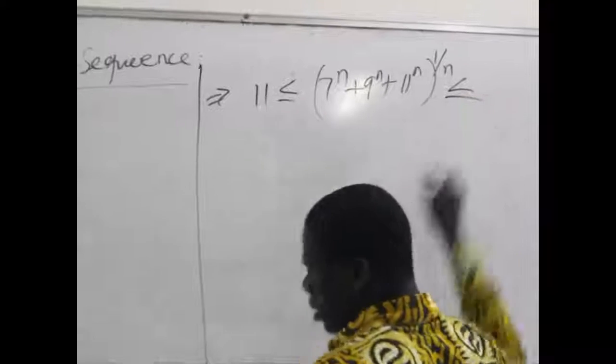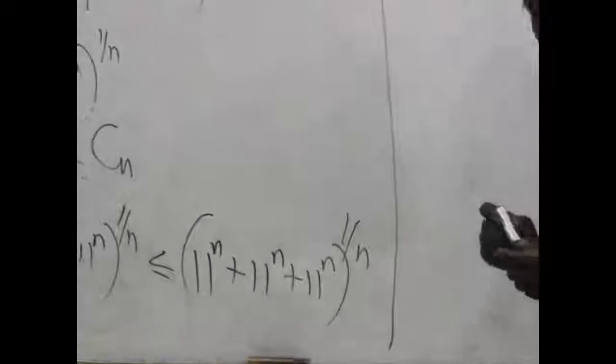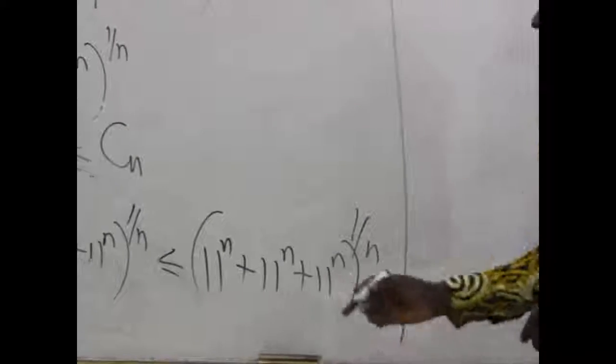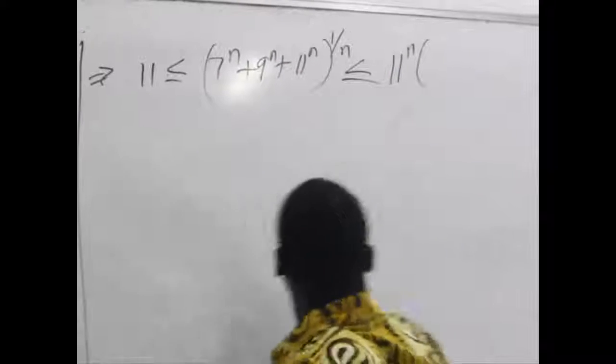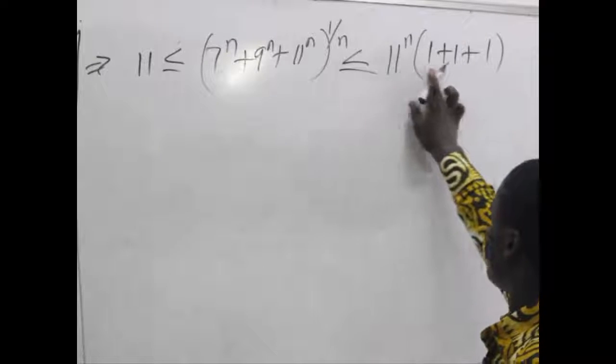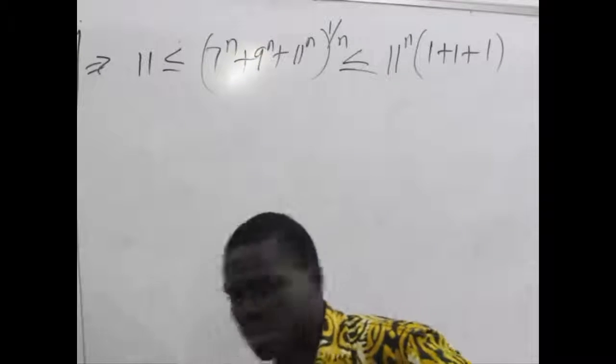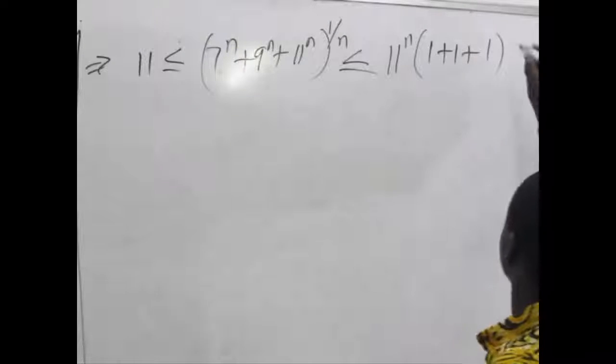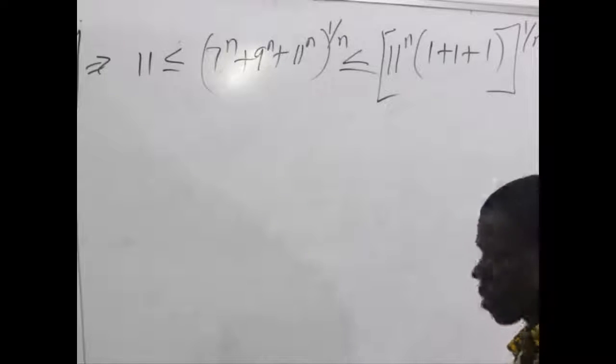And this will be less than or equal to, so we have 11^n, 11^n. Three terms here, and 11^n. So I factor 11^n out. I will have 1 plus 1 plus 1, such that if I expand this bracket I will get whatever is here. All this raised to the power of 1 over n.